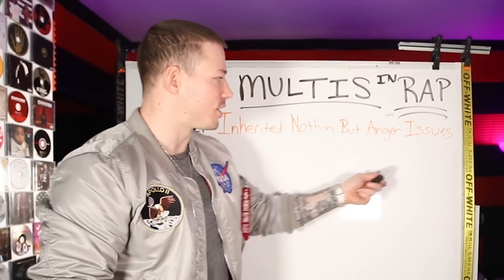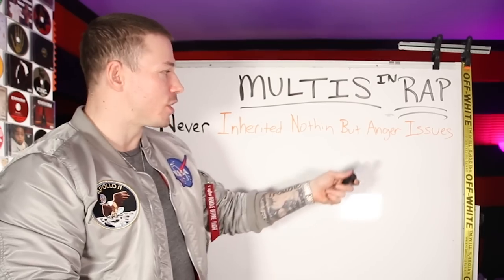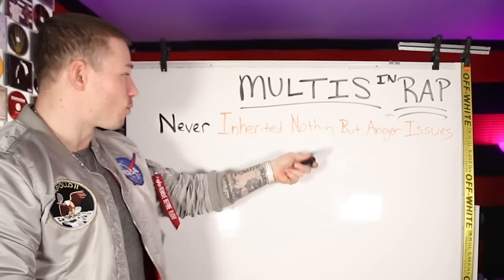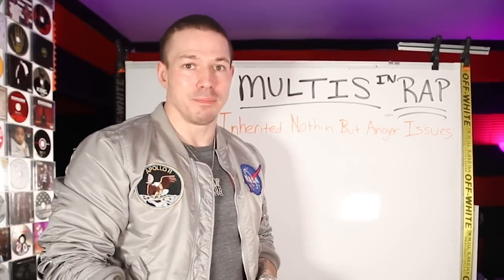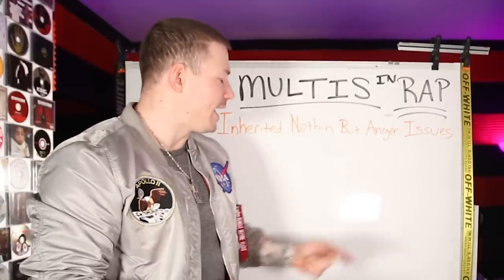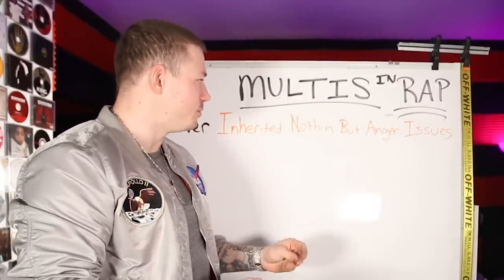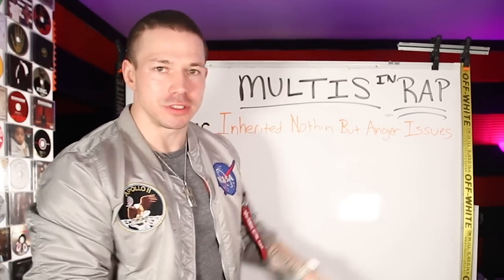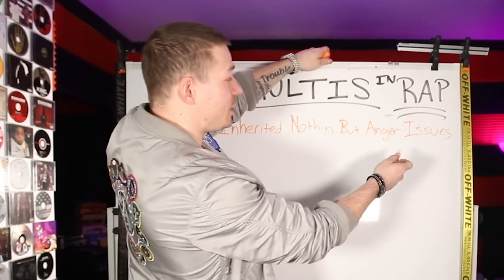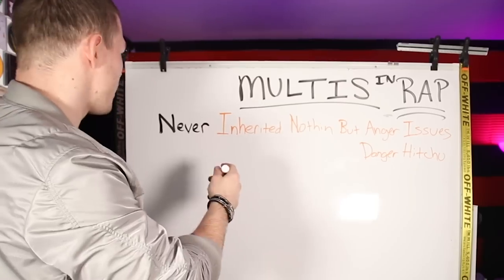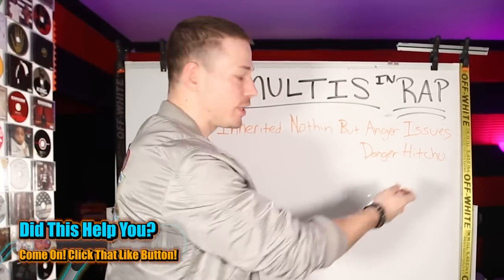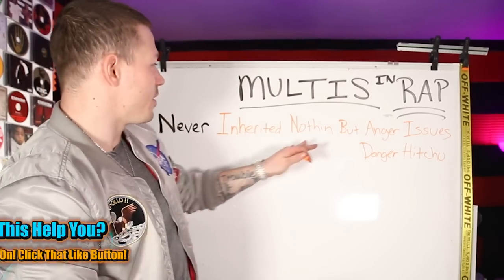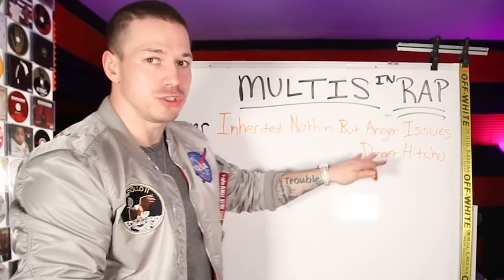So you try to find a set of words that are going to rhyme with 'anger issues,' and then we choose the best rhymes that fit — that's going to end the second bar, and then we build backwards by rhyming the words backwards. So let's say 'anger issues' → 'hang and lift you' → 'danger hits you.' 'Danger hits you' already works because we're talking about anger issues — danger will hit you if I had anger issues. You see how it rhymes? Anger / danger, issues / hit you. So that's a multi-syllable rhyme. Now what we have is: 'never inherited nothing but anger issues / danger hits you.'